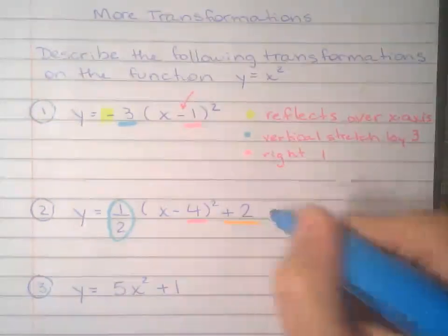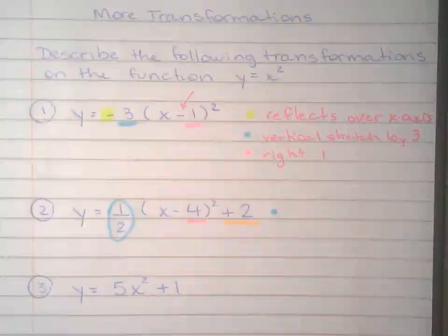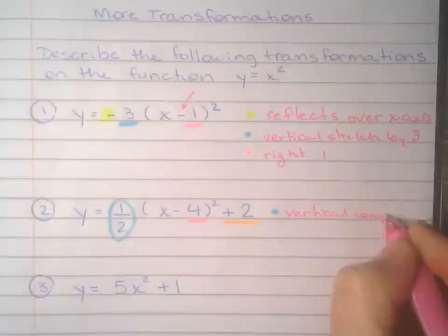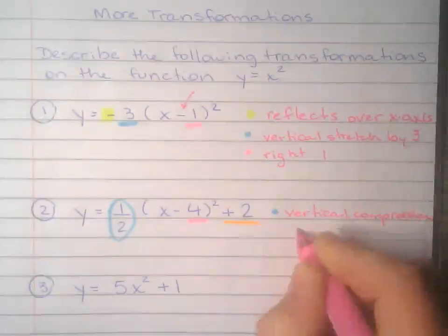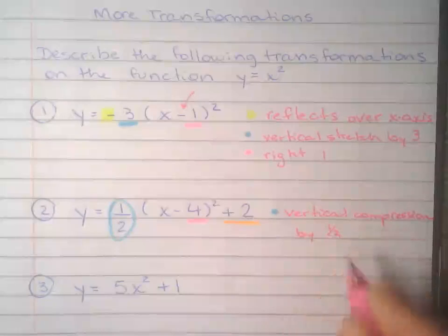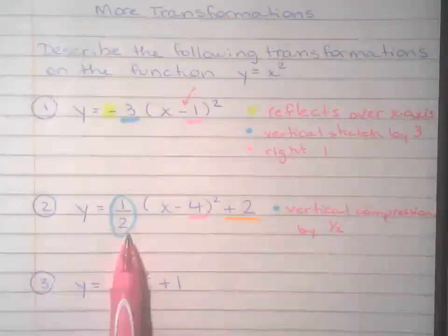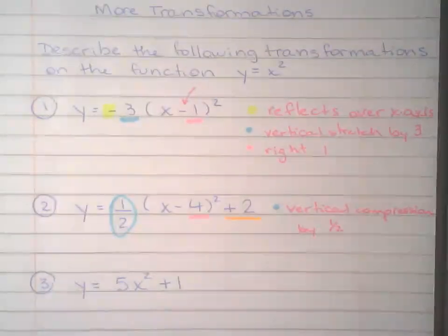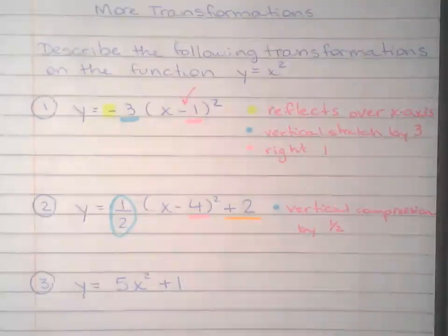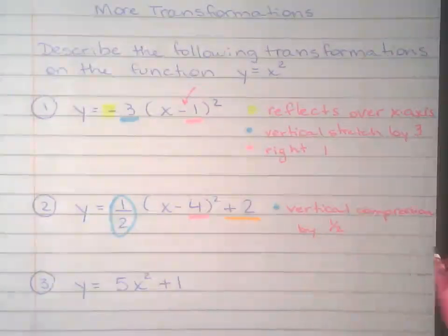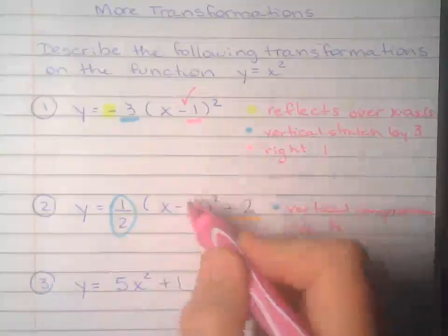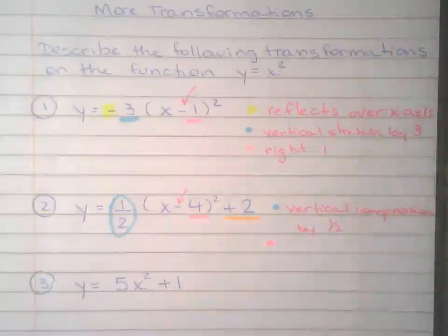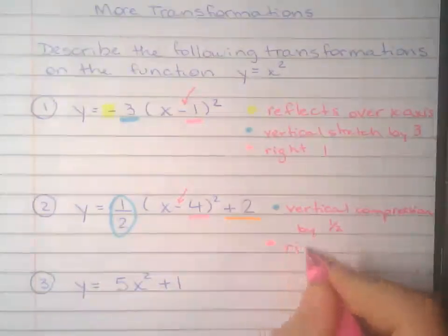So for the blue, that was a vertical compression by a factor of half. Again, when a is between zero, greater than zero and less than one, it's a compression. Because when you think about a balloon, you compress the balloon, it gets wide and it goes out on the sides. So this minus is from the formula.